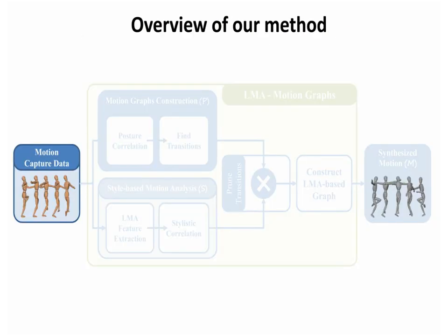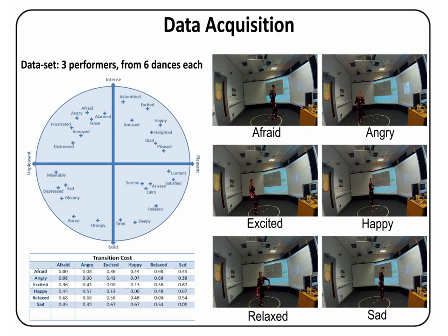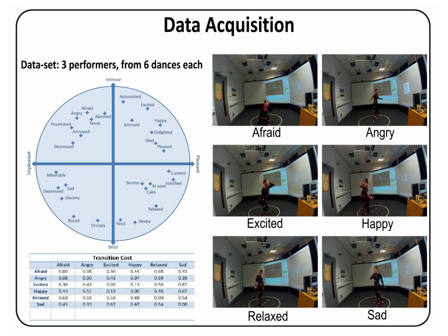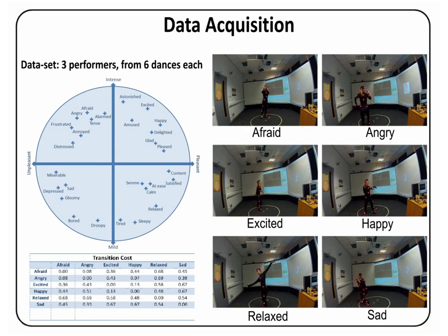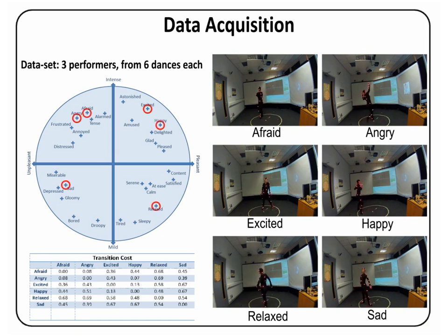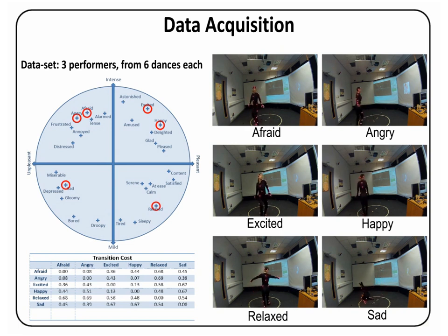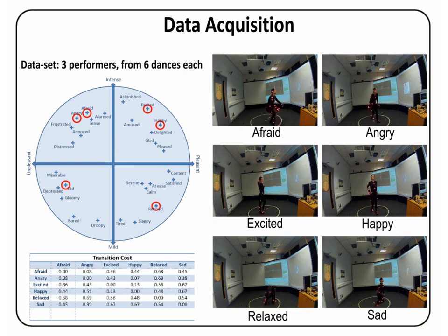We will briefly outline the main steps of our framework. First, contemporary dance data were acquired from three different actors, all of whom were professional dancers. The actors were asked to prepare and perform six different improvised dances, acting six different emotional states. These emotional states were chosen from Russell's circumplex model of emotion, as indicated in the figure.